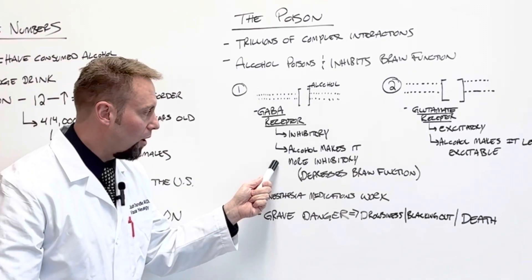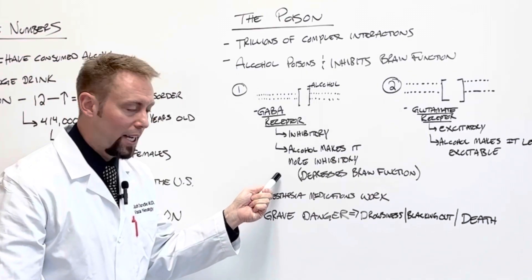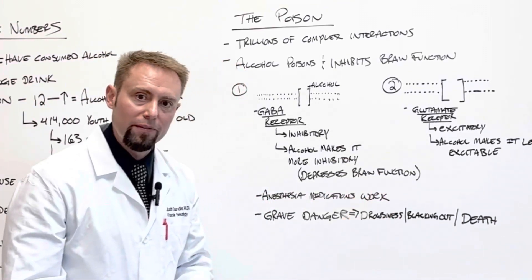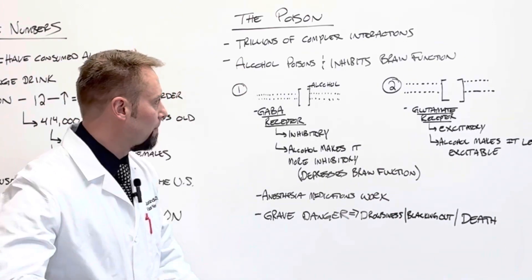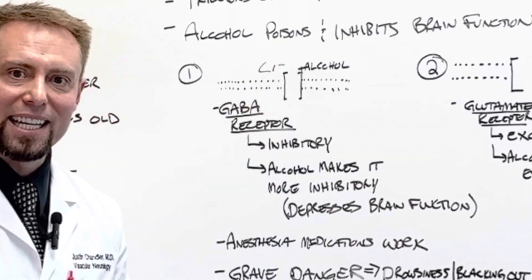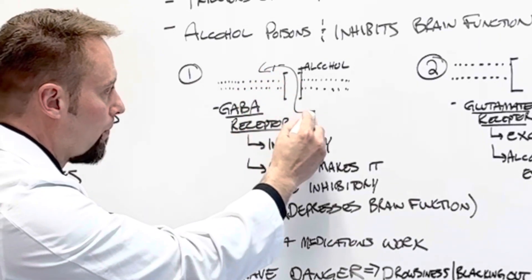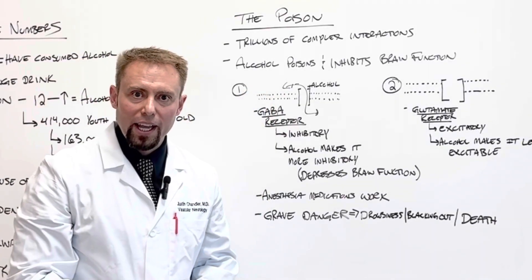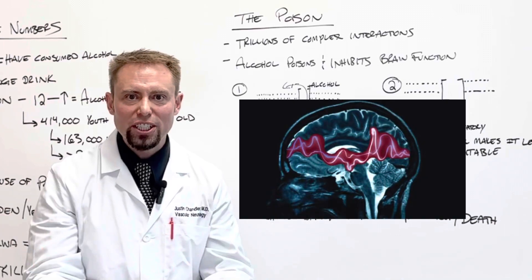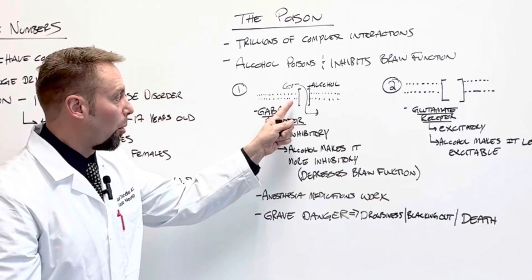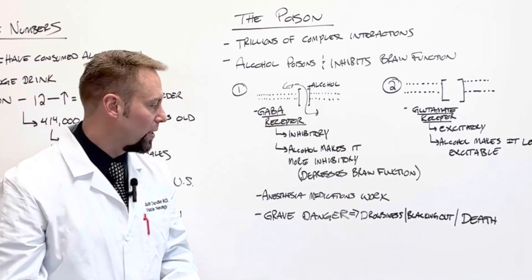In other words, alcohol makes it more inhibitory. It depresses your brain function. In fact, if you think about it, this is like letting a lot of negative people into your home. Chloride is a negative ion that gets rushed into your brain when you perpetuate or keep the GABA receptor open.